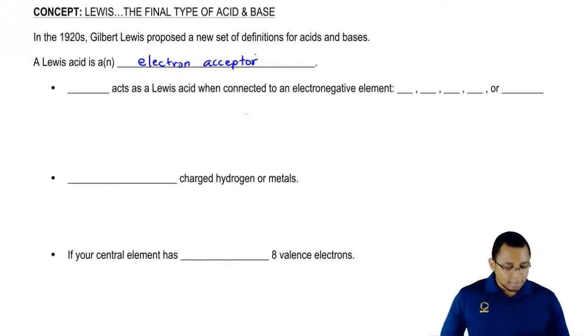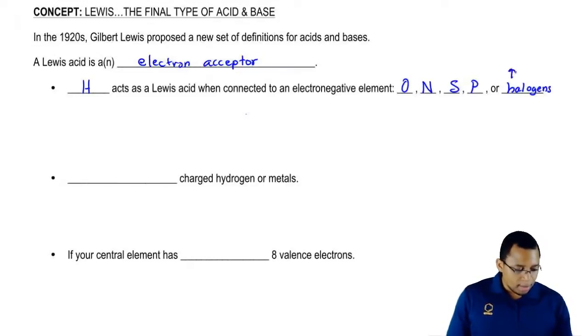The first type: H acts as a Lewis acid when connected to a very electronegative element. The electronegative elements are oxygen, nitrogen, sulfur, phosphorus, or the halogens - Group 7A. So I'm talking about fluorine, chlorine, bromine, or iodine.